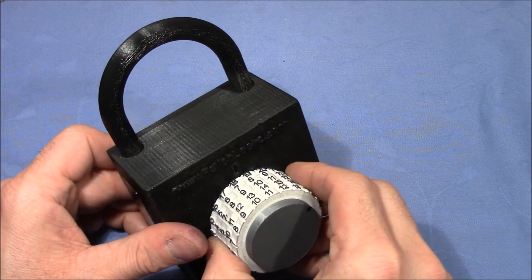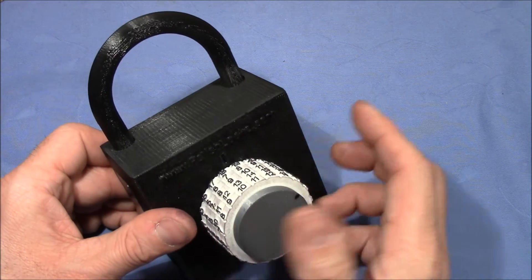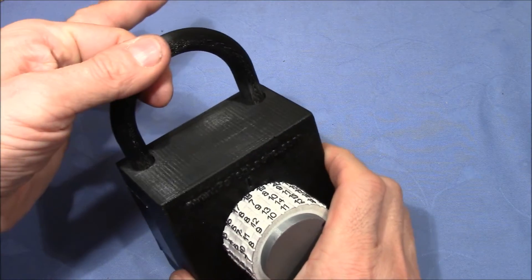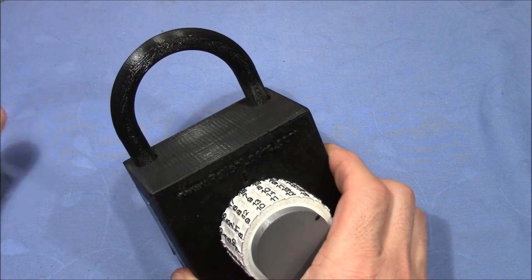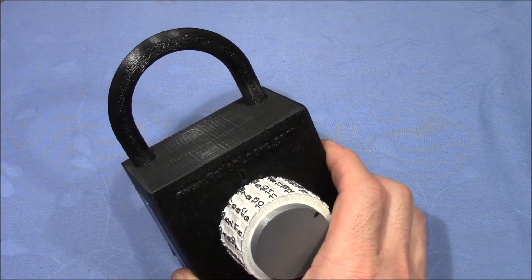And then the whole wheel pack would be able to be turned to the right, I believe, and then the shackle would come out. Let me quickly show you how this looks inside.